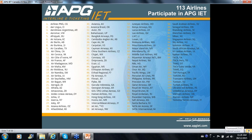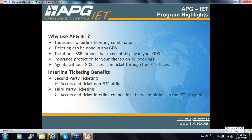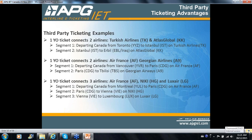Moving on. At this time, some non-BSP carriers in Canada — from a number of these carriers, perhaps you might recognize some, others not. But there's a great variety of possibilities. So why use the YO neutral e-ticket? Well, it permits you thousands of airline ticketing combinations. Ticketing can be done in any GDS — YO is present in Amadeus, Sabre, and Apollo.